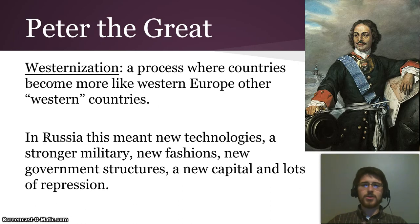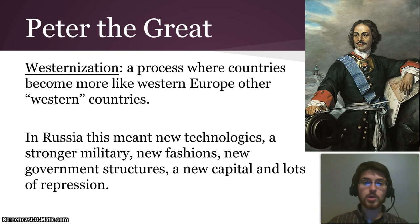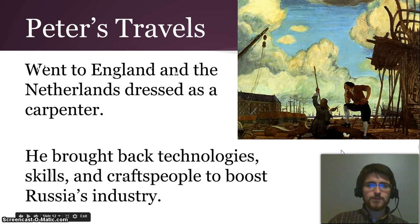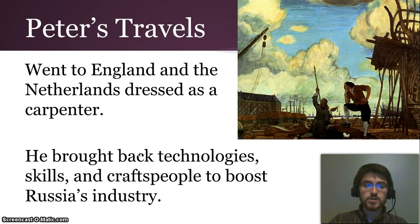Peter the Great was the next monarch we're going to talk about. He embarked on a process of westernization because Russia was a huge country with a lot of people, very little industry, and not a great military — lots of people, not a lot of technology. He instituted westernization to make Russia more like other European countries, which meant new technologies, a stronger military, new fashions, they cut off a lot of beards, new government structures, a new capital city, and lots of repression. To figure out how to make his country more western, Peter the Great dressed up as a carpenter secretly and snuck off to England and the Netherlands, did a lot of research, met craftspeople, and brought back new technologies, skills, and craftspeople to boost Russia's industry and build up their military and navy.